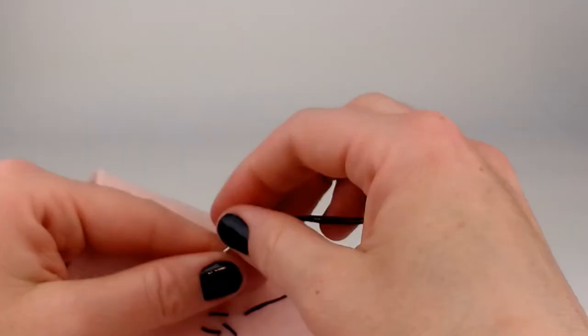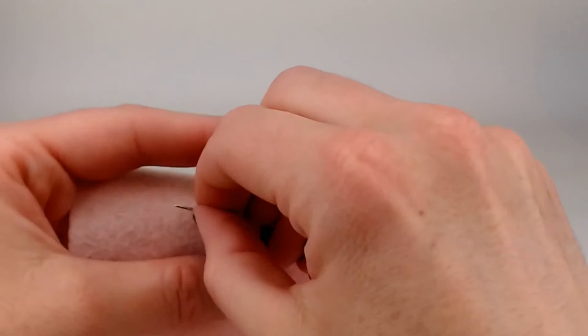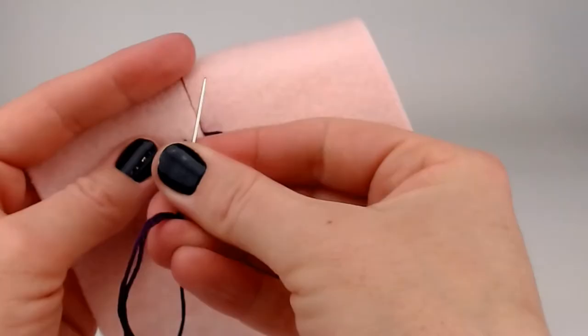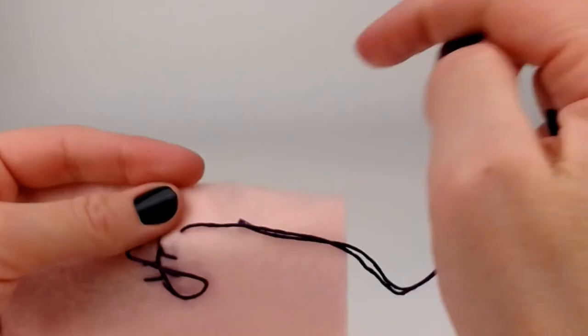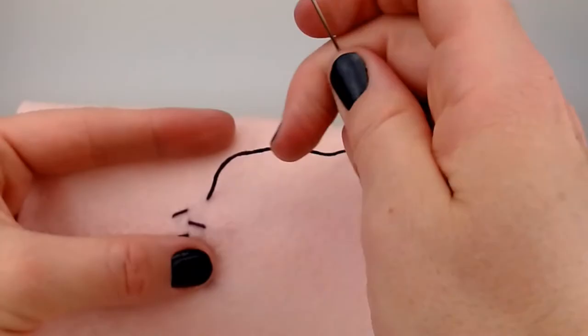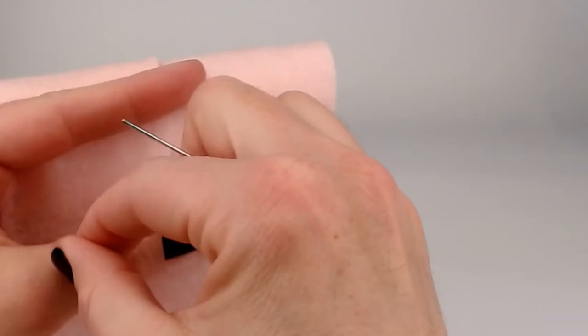I like to use this stitch on stuffed animals to make it look like they've had surgery or they've had their boo-boos repaired. Very decorative in that way. I can see this on like a little monster toy to make it look like Frankenstein creature all stitched up.